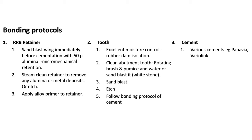For the RBB retainer, sandblast the wing immediately before cementation with 50 microns of alumina to increase surface area and micro-mechanical retention. Then steam clean it to remove any alumina or metal deposits, or alternatively etch with phosphoric acid for 20 seconds and wash off. Finally, apply a metal primer for bonding — make sure you don't cure it. On the tooth itself, use a rubber dam with floss ligatures for moisture control, then use a polishing disc to clean debris before sandblasting, etching, and rinsing. Follow the bonding protocol of your chosen cement — such as a dual-cured resin cement like Panavia or VarioLink.